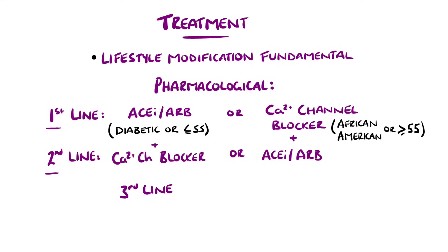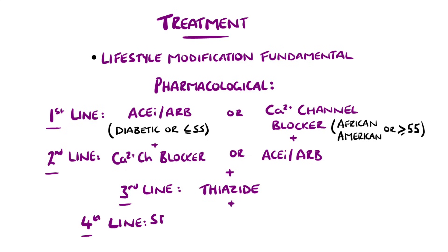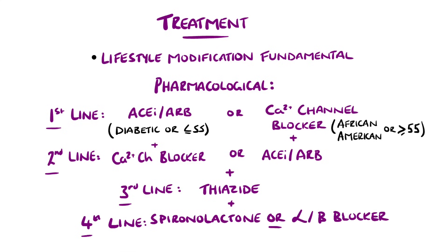The third step up is the introduction of a thiazide diuretic, and if at this point the pressure is not controlled, then secondary hypertension should be considered. It is also possible to add low dose spironolactone, or an alpha or beta blocker, if the potassium levels are already high.